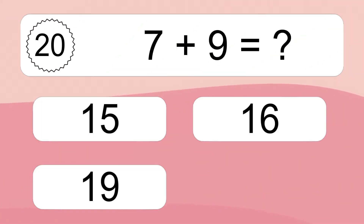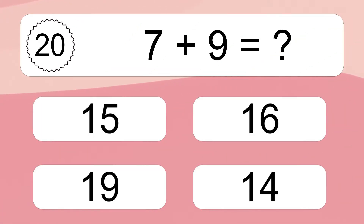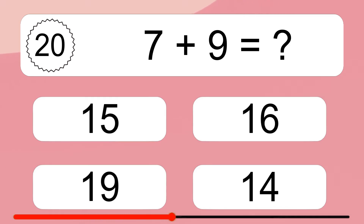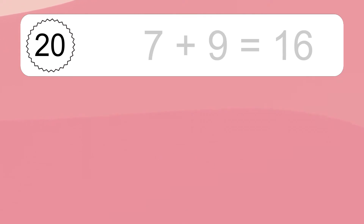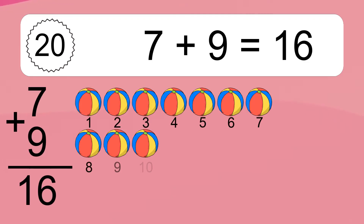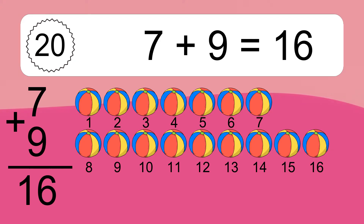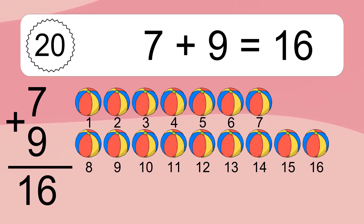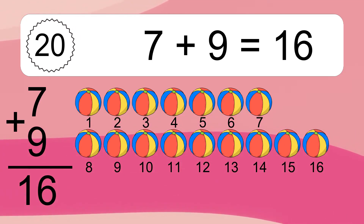7 plus 9 equals what? 7 plus 9 equals 16. Let's count it. 1, 2, 3, 4, 5, 6, 7, 8, 9, 10, 11, 12, 13, 14, 15, 16.